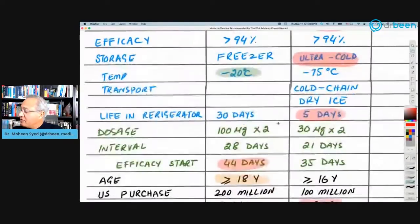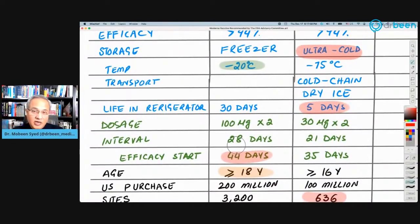Then life in refrigerators. So let's say you got the vaccine out of the cold storage, and now you put that in the refrigerator. Moderna can stay there for 30 days and stay okay. On the other hand, Pfizer's vaccine, once it is outside the ultra-cold storage, in the refrigerator, it can only stay there for five days. Dosage: The Moderna's vaccine has 100 microgram, two doses, and Pfizer's vaccine has 30 microgram, two doses.